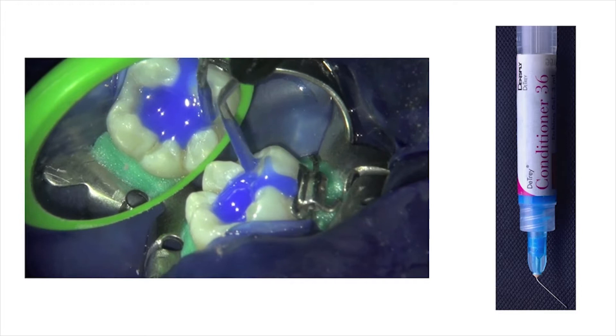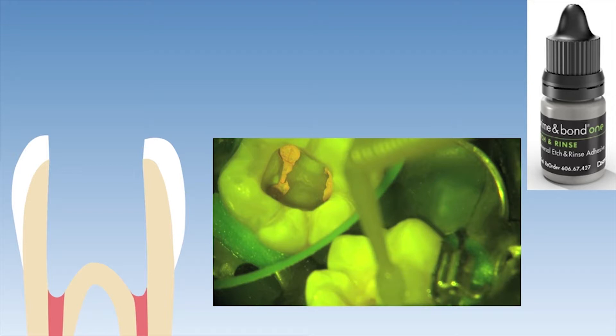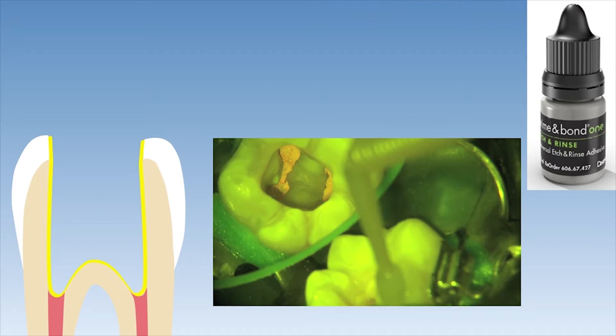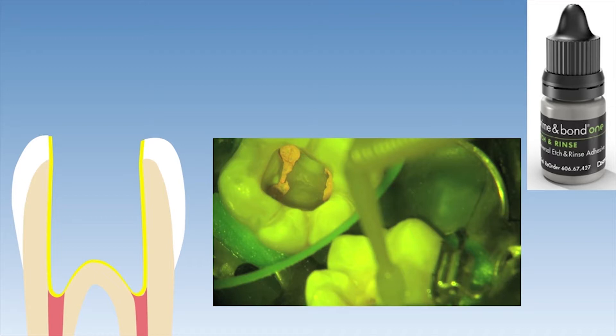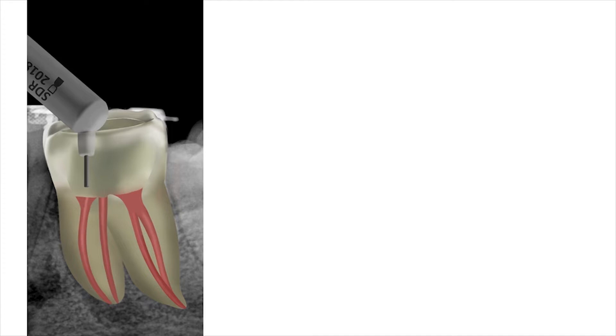The enamel and dentine was etched with phosphoric acid for 15 seconds before the etchant was rinsed off thoroughly with water and lightly air dried with compressed air. A micro brush saturated with Prime & Bond etch-and-rinse was used to infuse the bonding resin into the etched enamel and dentine surfaces for approximately 10 seconds, before it was light cured for 20 seconds after evaporation of the solvent. Here we can see this step being performed clinically — bonding resin application, infusion into the etched surfaces, followed by solvent evaporation, and finally the light curing step.